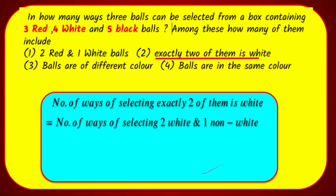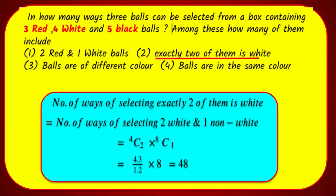Second sub-question: Exactly 2 of the balls are white. We select 2 white from 4 white balls, and 1 non-white from the remaining 8 balls (3 red + 5 black). That is 4C2 into 8C1 = 6 × 8 = 48 ways.